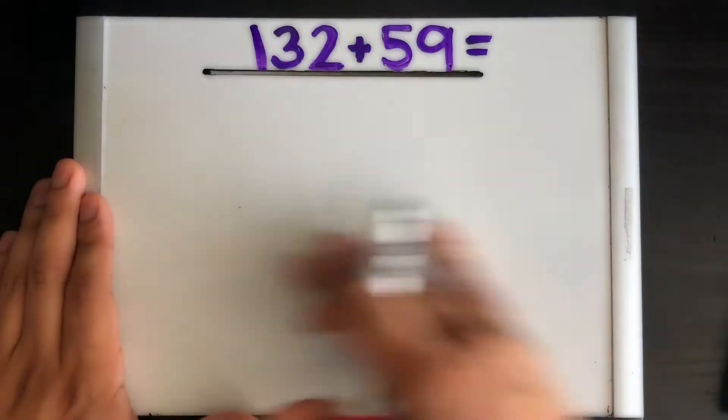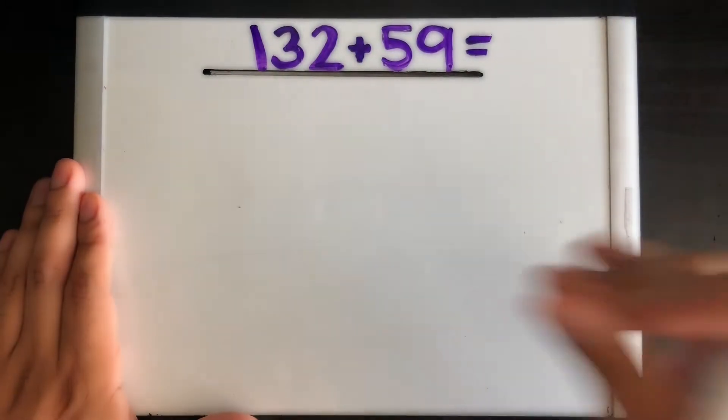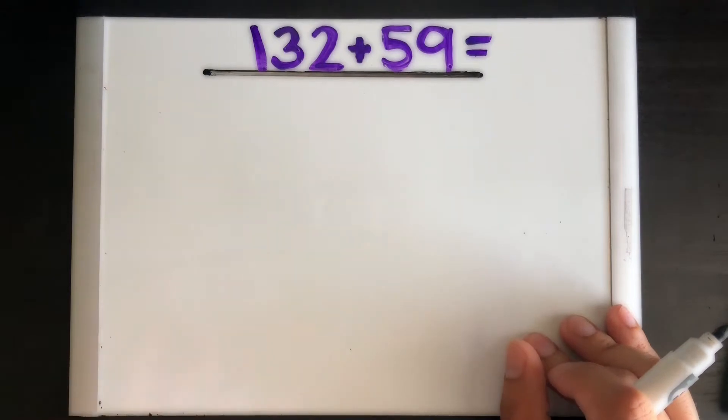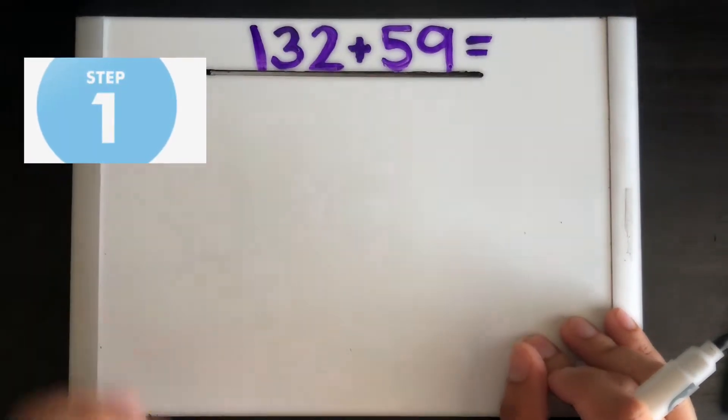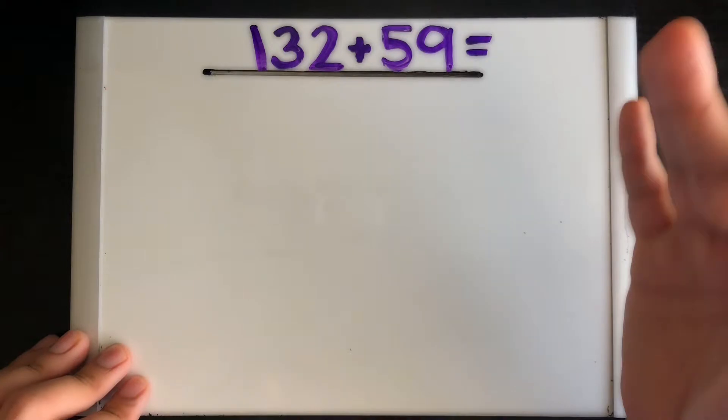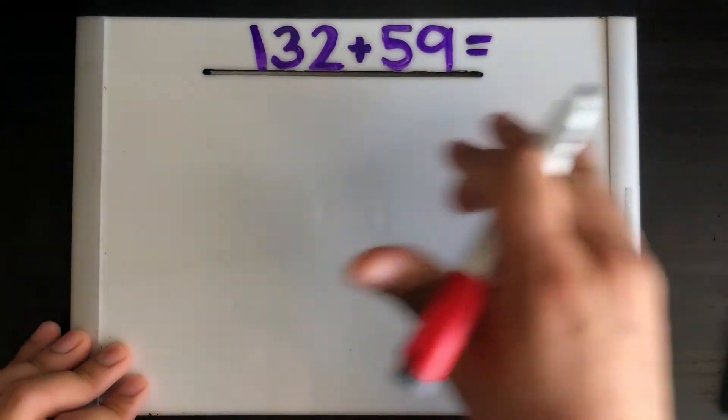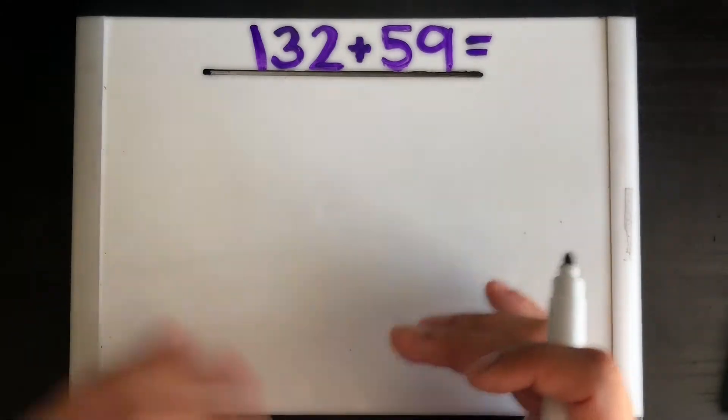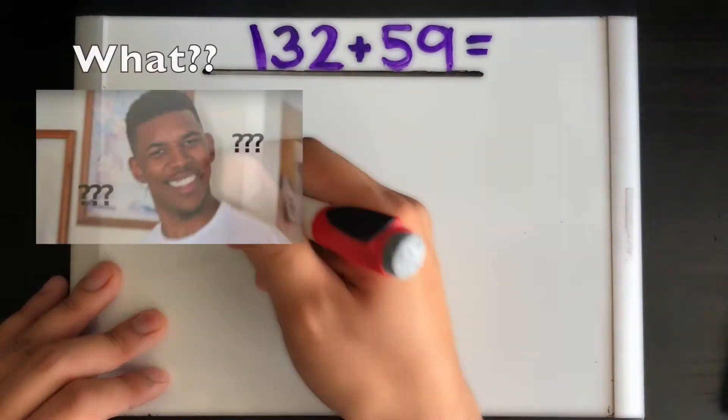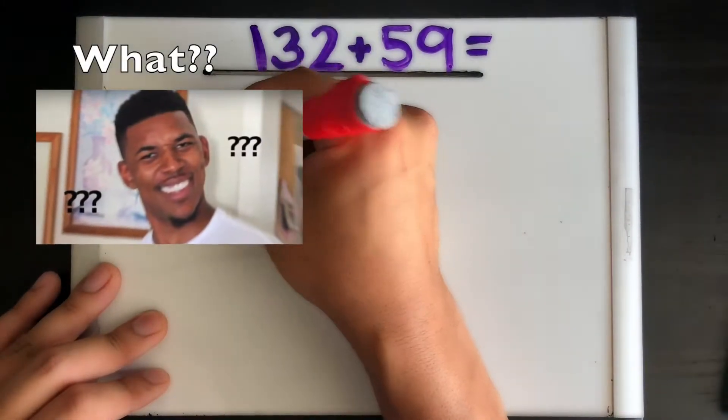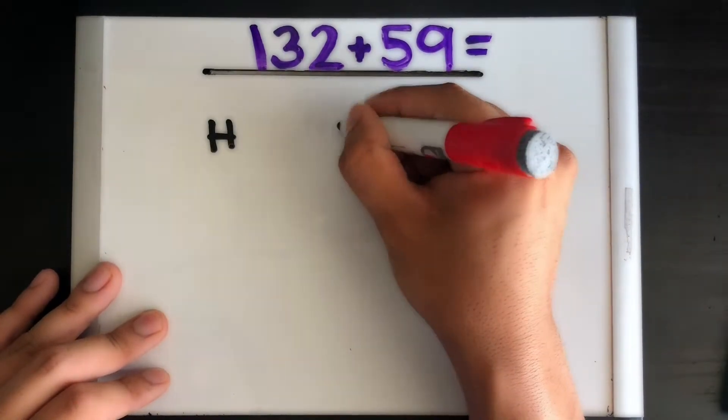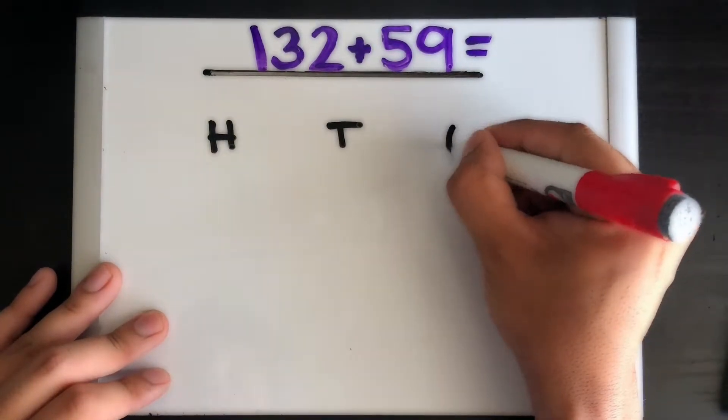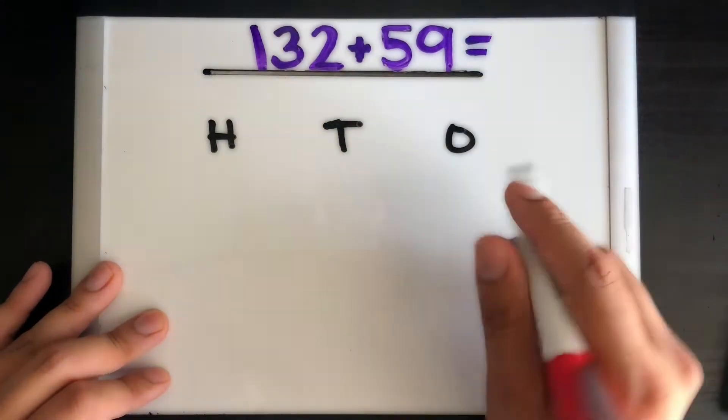Follow along with me and let me show you why. Okay, so the first step that you need to do using the place value strategy is do exactly like it says: make a place value chart, or you may have heard it as an HTO chart. So if you know what it is, follow along with me and write this down. Write an H, write a T, and write an O.